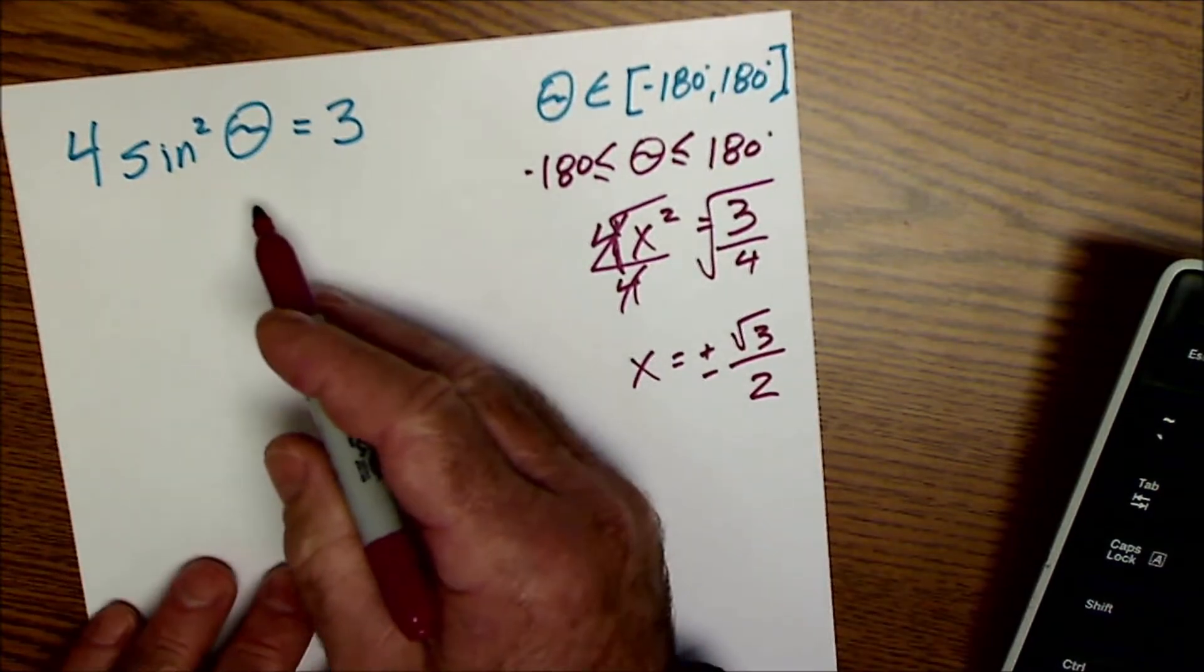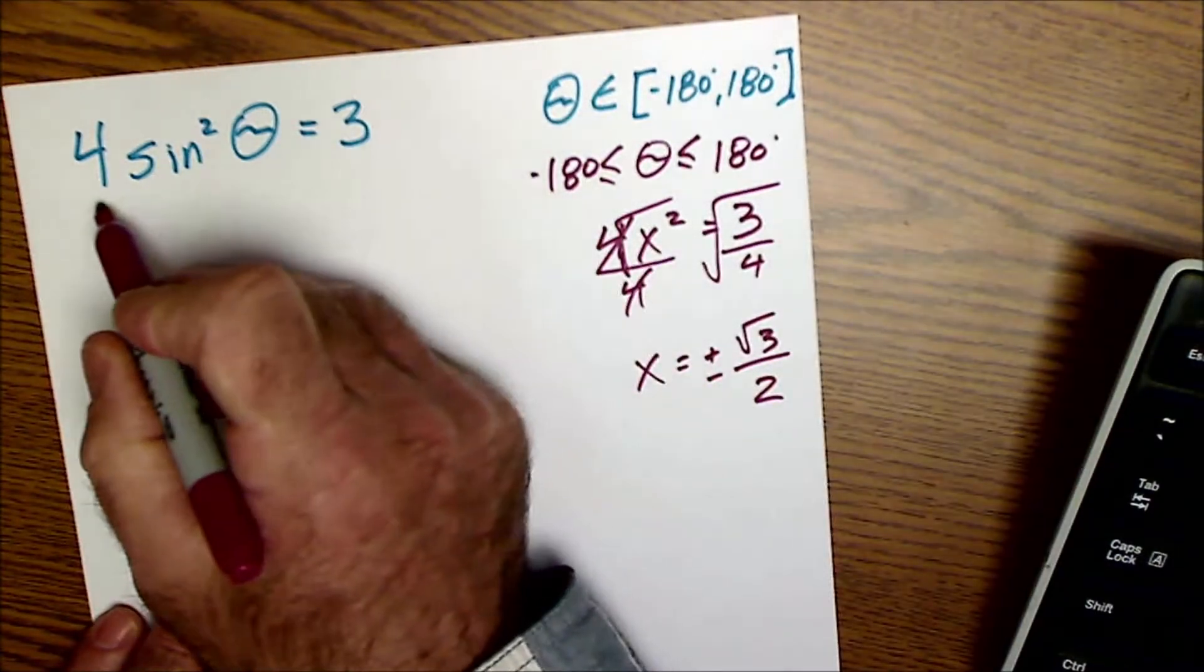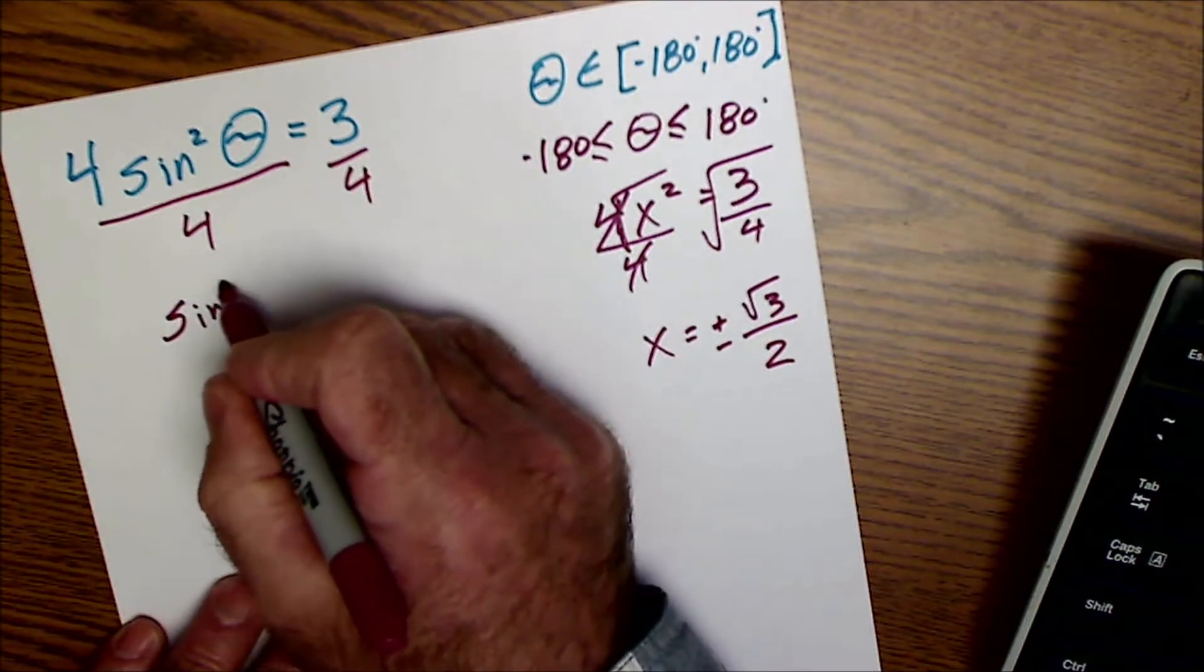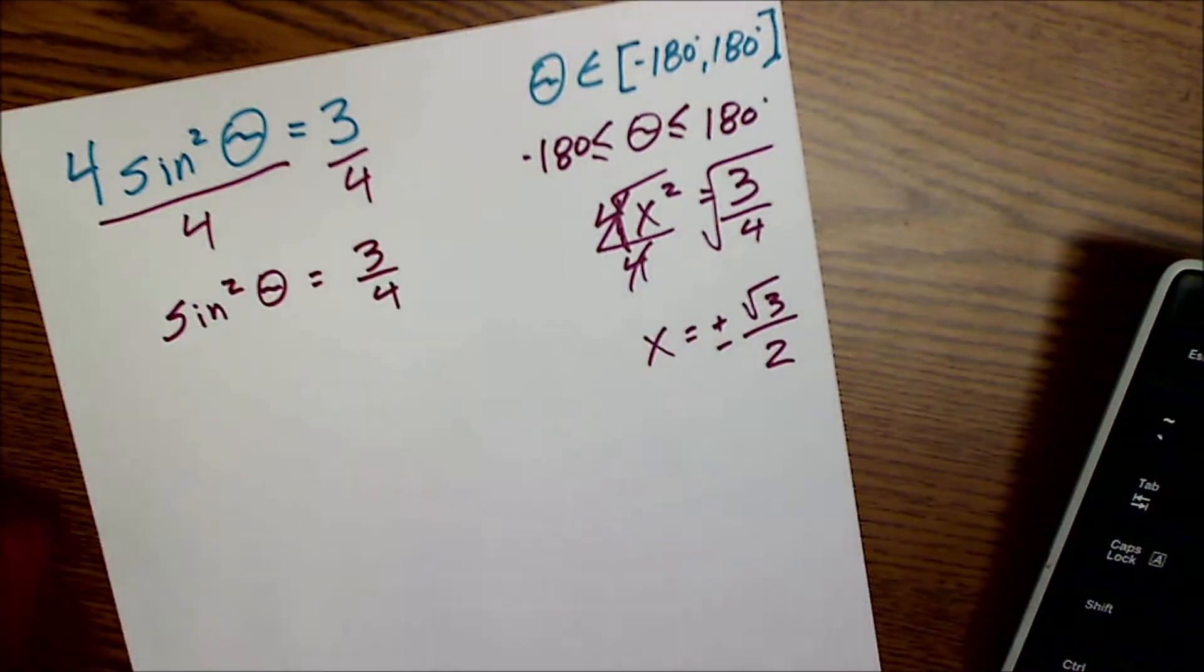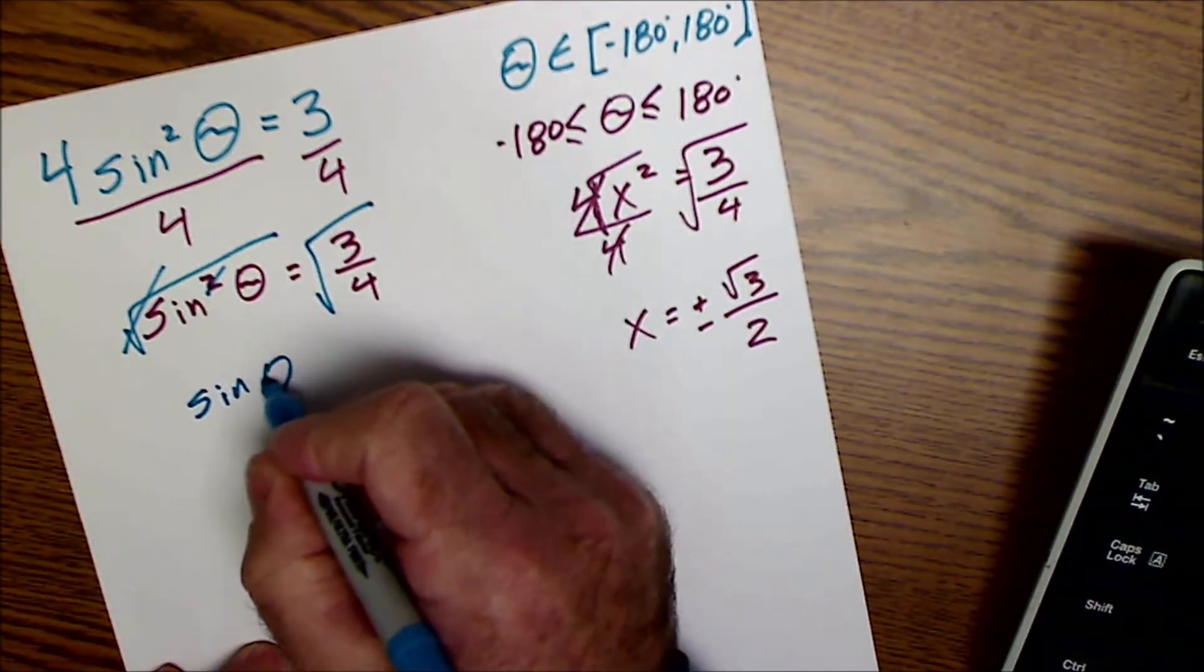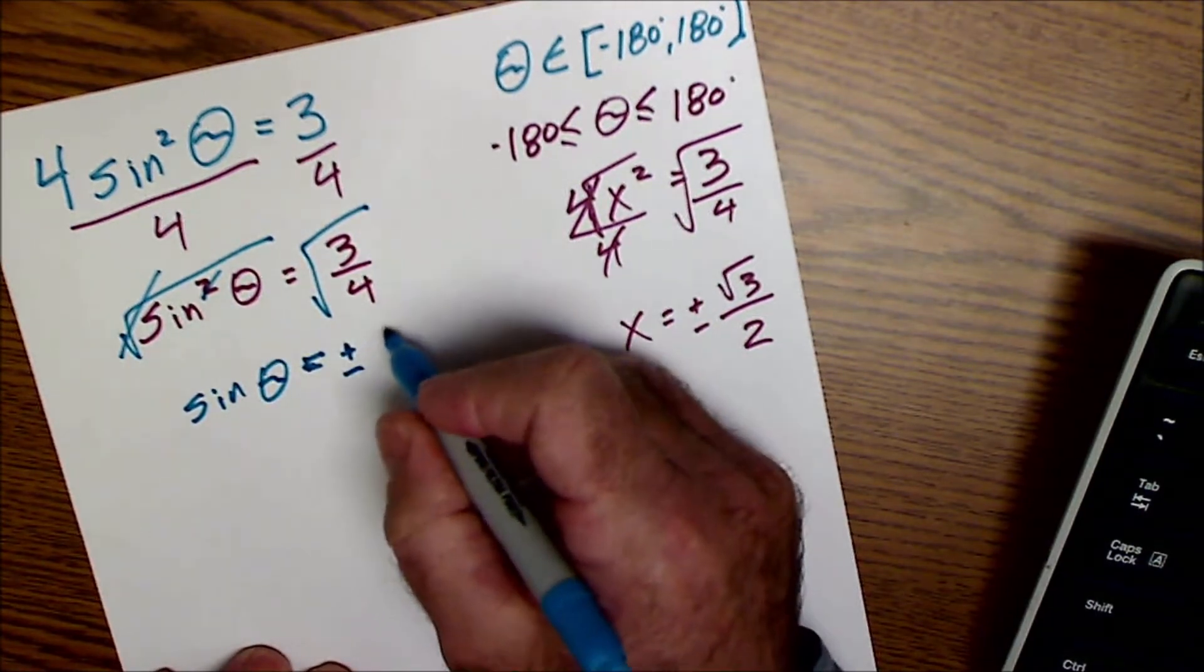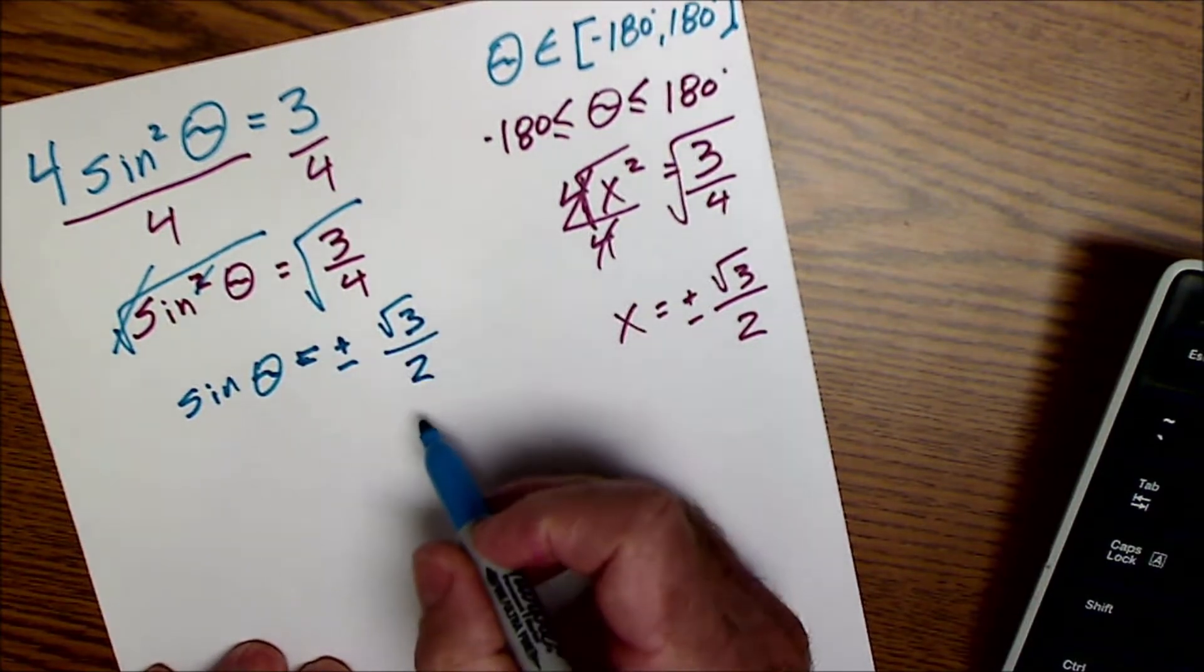So that's the exact same thing here. I'm going to just work with sine of theta instead of x. The first thing I'll do is divide both sides by 4 to get sine squared of theta is equal to 3 fourths. From there, I'm going to take the square root of both sides. Square root of a square cancel. I'll do that to this side as well, leaving you a sine of theta is equal to plus or minus the square root of 3 over the square root of 4. Square root of 4 is 2.